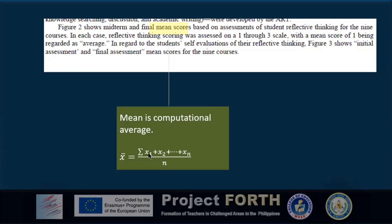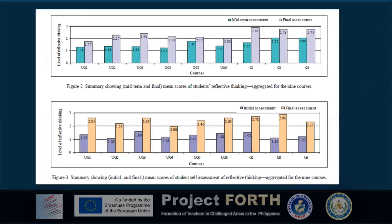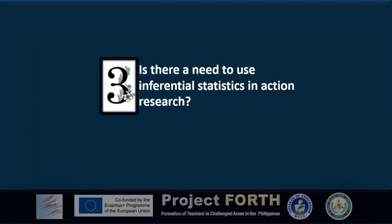The formula for the mean is the summation of all scores divided by the number of scores — simply add the scores and divide by how many there are. The graphical presentation uses bar graphs, comparing midterm and final assessments for each course. You can clearly see how mean scores increased in terms of level of reflective thinking.